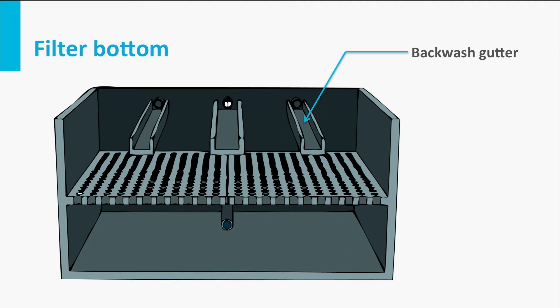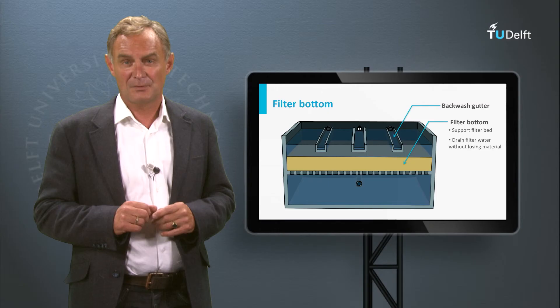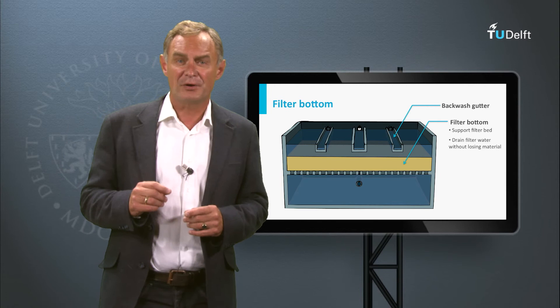Last but not least: the filter bottom. The filter bottom must support the filter bed and drain the filtered water without losing material. In addition, it is crucial for the equal distribution of flow over the filter during backwashing.